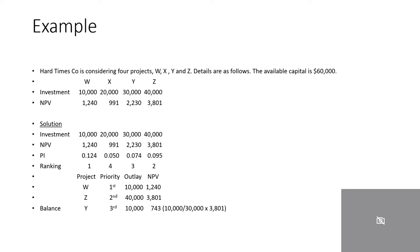Solution: To calculate the profitability index (PI), we divide the NPV by the investment for each project and then rank the projects based on the PI. Project W gives a PI of 0.124. Project X gives a PI of 0.050. Project Y gives a PI of 0.074. Project Z gives a PI of 0.095.